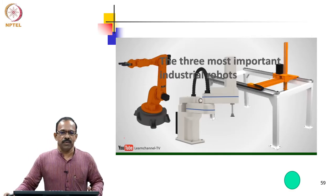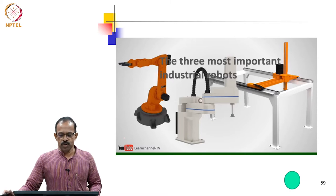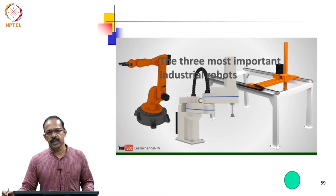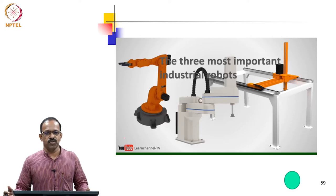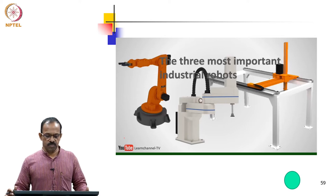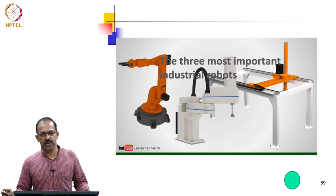Hello, welcome back. In the last class we discussed about the robot architectures, the body and arm assembly configurations, and we found that there are two types of joints: the rotary and prismatic. By arranging these rotary and prismatic joints, we will be able to get different body arm configurations.